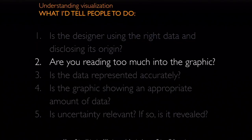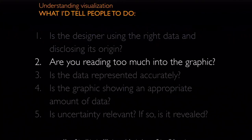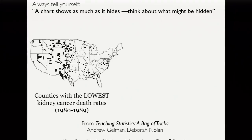The second principle is a very important one. As I mentioned, charts, maps, and visualizations can be extremely persuasive, and we also tend to read too much into them. The first example comes from a book I recommend to everybody called Teaching Statistics: A Bag of Tricks by Professors Andrew Gelman and Deborah Nolan. In that book, they show a map of the counties in the United States with the lowest kidney cancer death rates in a given decade — those counties are highlighted on the map.